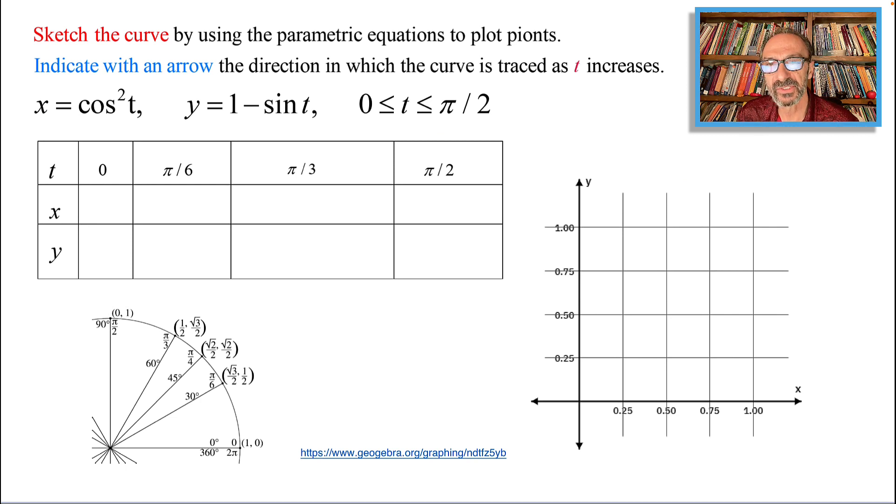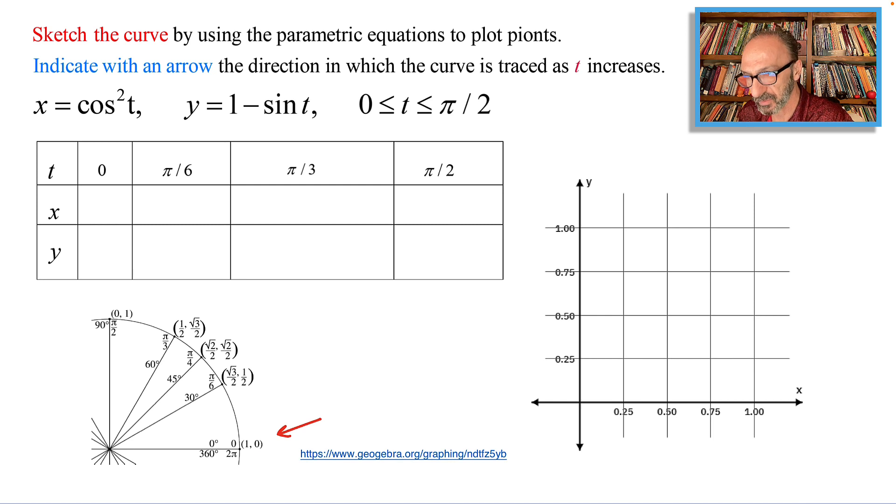When t equals zero, cosine zero is one and sine zero is zero, because in the unit circle cosine comes from the x coordinate and sine comes from the y coordinate. So when t equals zero we have x equals cosine zero being squared, which is one squared, and that is one.